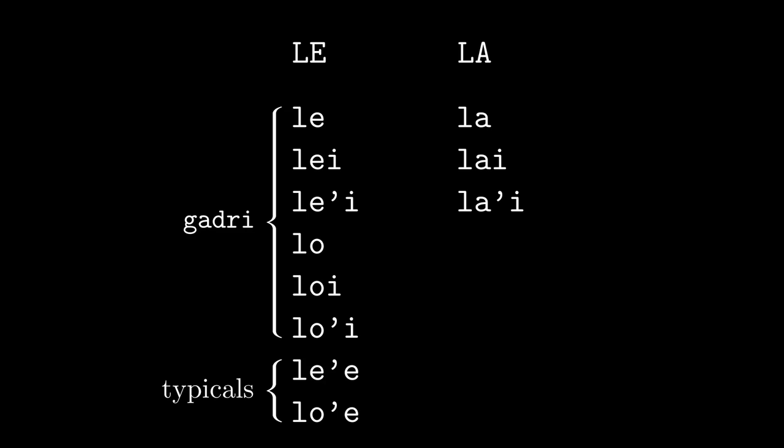All of these create sumti for use in bridi. In the next video, I'm going to cover numbers so that you can say things like two cats, or all cats, or half the cats, or enough cats, or no cats, or the third cat, or seven of nine cats, or the cat ate twice, or every cat is fuzzy, or errata.